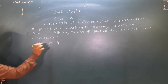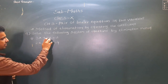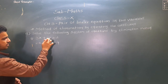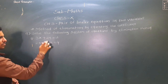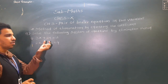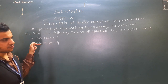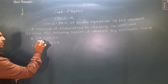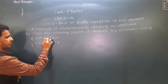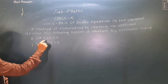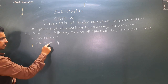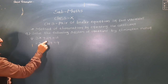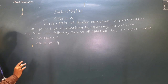We have to make the coefficient of either x or y the same in both equations. Here the coefficient of y is 2 in the first equation and 3 in the second equation. So we have to find the LCM of 2 and 3, which is 6.